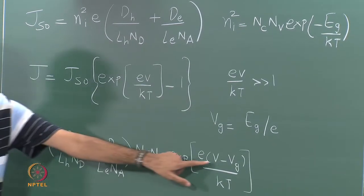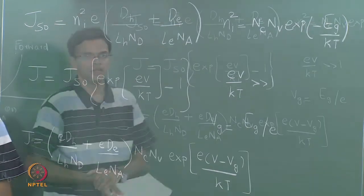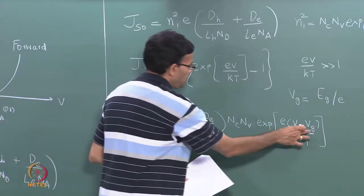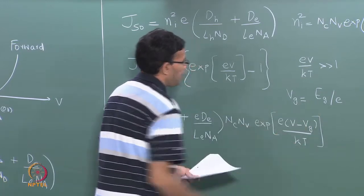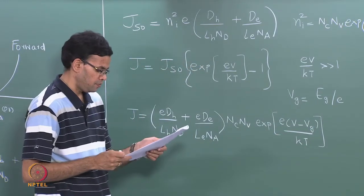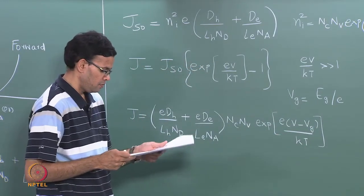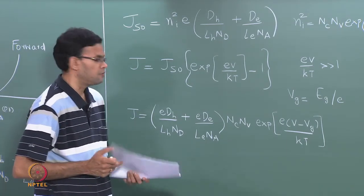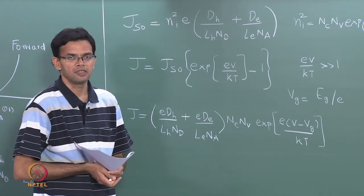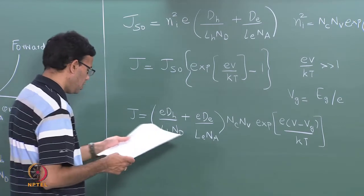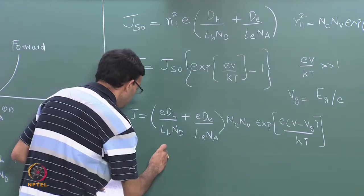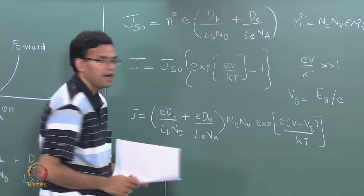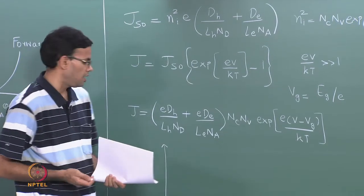Here V is the external potential applied during forward bias, and V_g is the band gap divided by e. So if you were to plot the current versus voltage for different semiconductors, we find that if you want a given current, the voltage will be higher if the band gap is higher.